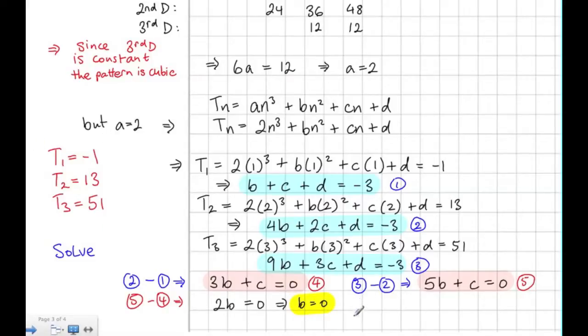Now we sub this into equation 4, and we see that 3 times 0 plus c equals 0. So it follows that c is also equal to 0. And lastly, we sub these values into equation 1 above. Putting 0 in for b and for c, it gives us that d is equal to -3.